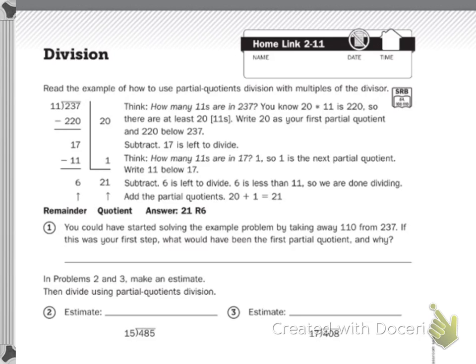Think how many 11's are in 17. 1. So 1 is the next partial quotient. Write 11 below the 17. Subtract, 6 is left to divide.